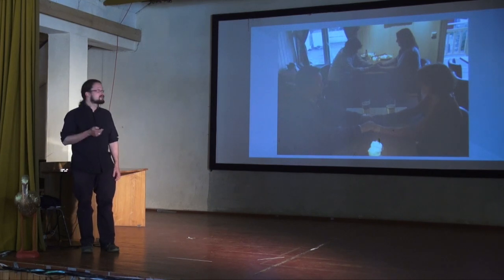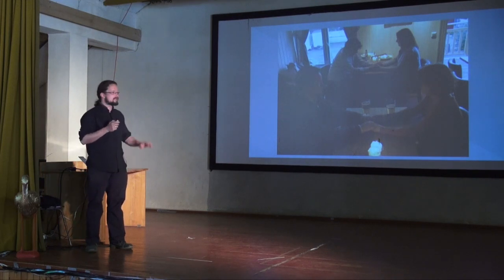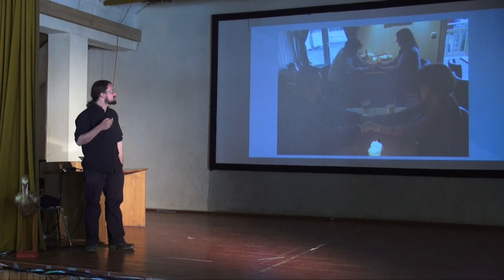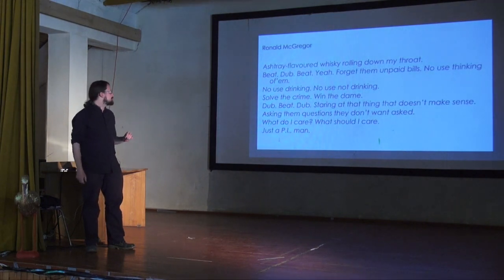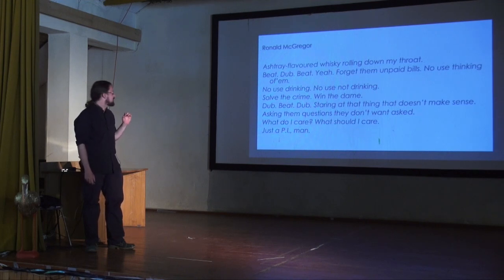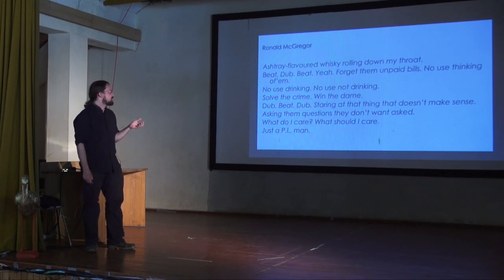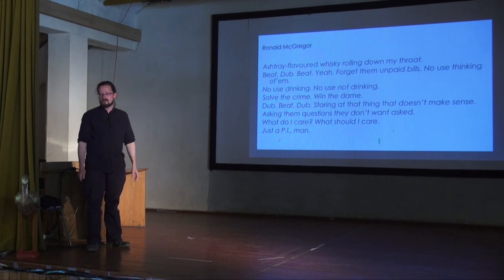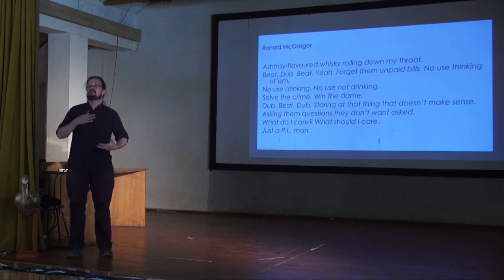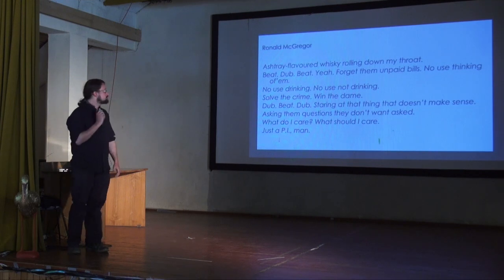Another approach, borrowed from the LARP 'Love in the Age of Debasement,' is to write characters as the inner thoughts of the character: 'Ashtray-flavored whiskey rolling down my throat. Forget them unpaid bills — no use thinking of them. Solve the crime, win the dame. Staring at that thing that doesn't make sense. Just a private investigator man.' This inner monologue captures how the world looks to the character. From that, I can interpret body language, ways of interacting, and a way of being this character.